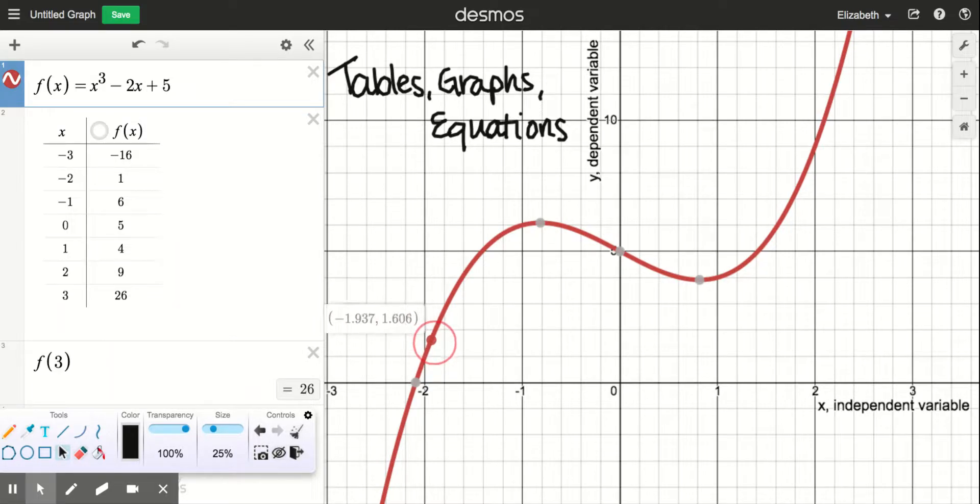In between every number you can think of, there's another number. So what the graph does is it shows you every single one, the input and the output.